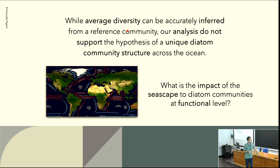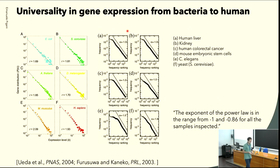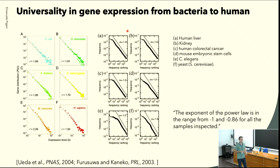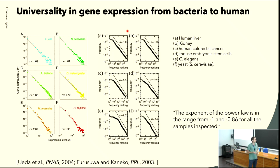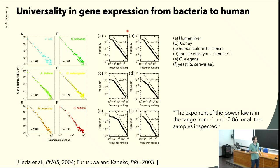Now let's move to the second part, where I will focus more on the functional level — the gene expression level. When we started to analyze the metatranscriptomic data and read the literature, we found that the species-abundance distribution has already been studied in the context of gene expression. The underlying finding was that gene expressions were always power-law distributed, and the exponents were found to be similar across several species — from bacteria to humans.